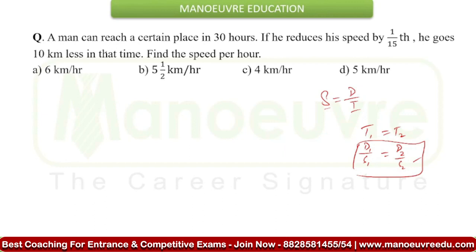If you don't know the distance, you can assume that the distance covered is x km. So x km is the distance, S1 is the first speed, which we take as 15. After that, the speed is reduced by 1/15th, meaning the new speed becomes 14. Clear everyone?